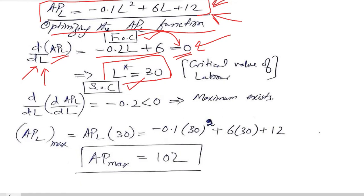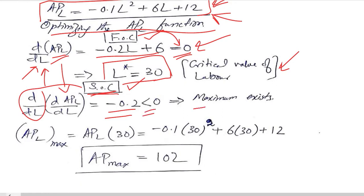We note the critical value L=30 and move to the second order condition, where we take the second derivative of the first order derivative already calculated. The answer is minus 0.2, which is negative, confirming this is a maximum. This is what we want — to maximize the average product of labor, that is, how much each unit of labor produces.